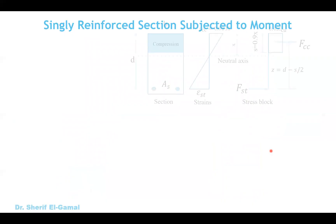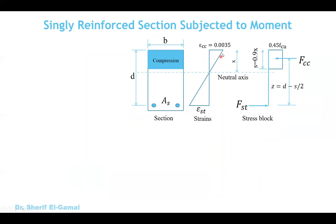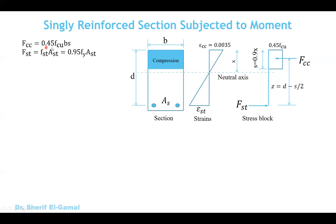For singly reinforced rectangular sections, as we learned in previous videos, the strain distribution is always linear. This shows the stress block at the ultimate limit state according to the BS code, the bridge standard. We have two forces: the compression force in the concrete called F sub cc, and the tension force in the steel reinforcement called F sub st. F sub cc can be obtained from the stress multiplied by the compression area, which equals 0.45 F sub cu multiplied by b multiplied by the depth s.